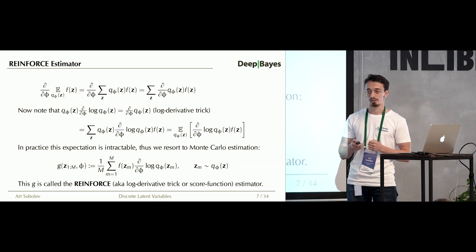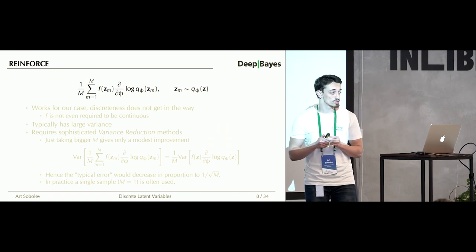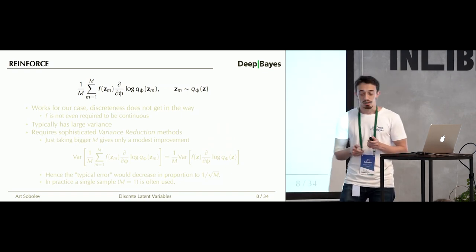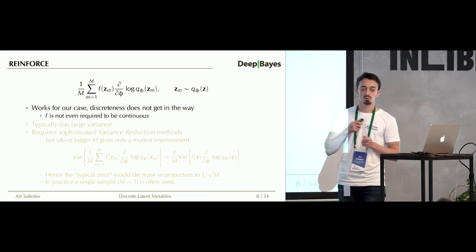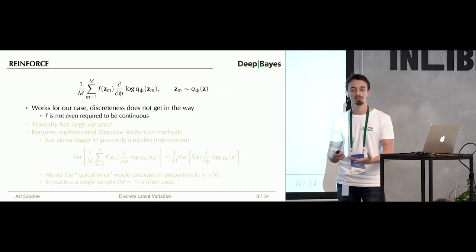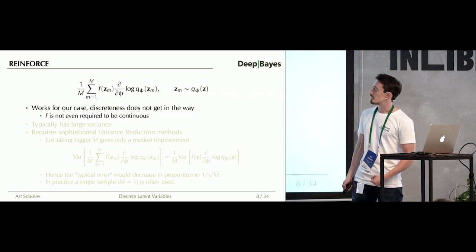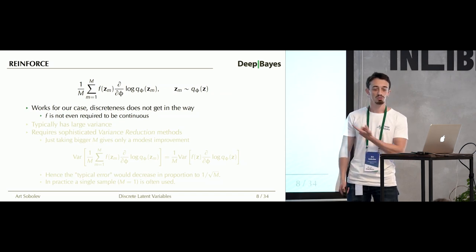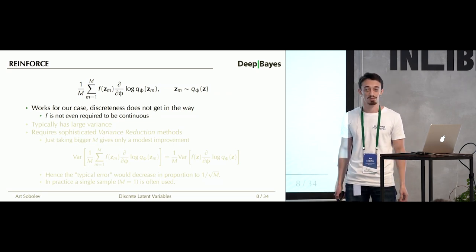The REINFORCE estimator works for discrete random variables — unlike the reparameterization trick, the discreteness of our samples does not prevent us from estimating the gradient. What's even more interesting is that f is not even required to be differentiable; we only rely on the values of f, and nowhere did we assume f is differentiable.